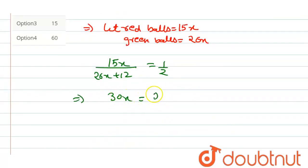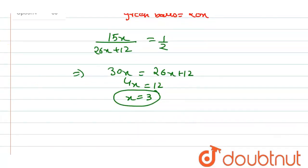So this is 30x equals 26x plus 12. So 4x equals 12. This implies x equals 3.